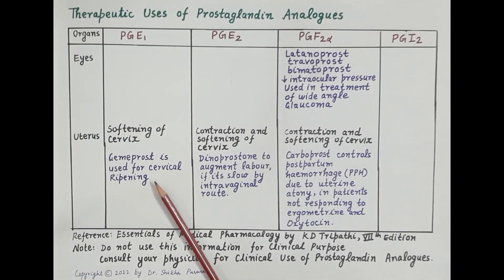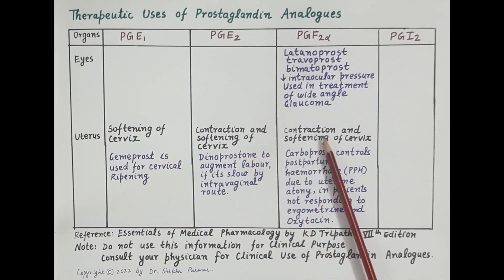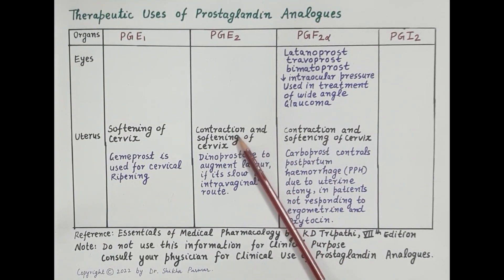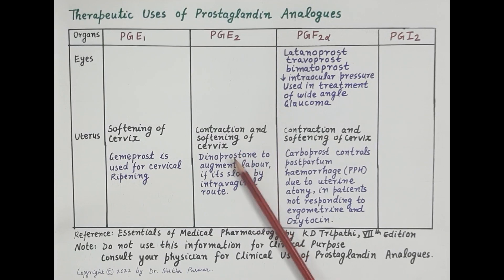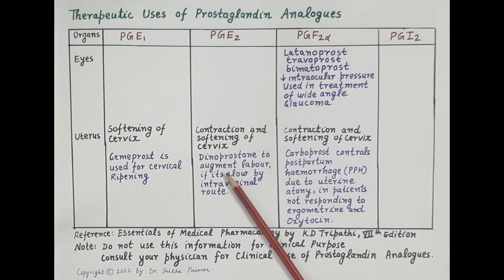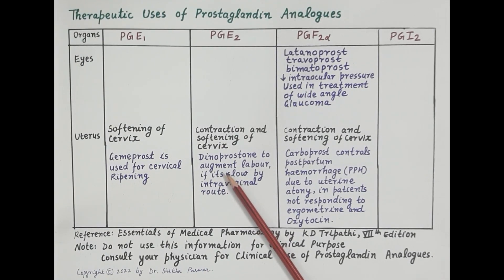PGE2 and PGF2 alpha produce contraction of both pregnant and non-pregnant uterus and also induce cervical ripening. Dinoprostone is a prostaglandin E2 analog that may be used to augment labor — that is, to speed up the process of labor if it is slow, for example in a woman giving birth for the first time — and is administered by the intravaginal route.